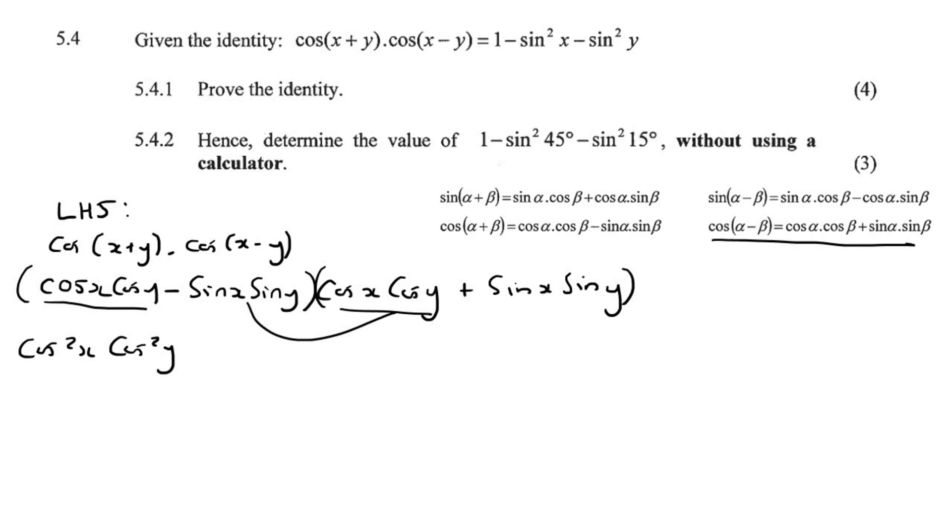Then you would multiply those parts together. Then what you'll find is that this part and then this part, one will be a plus and one will be a minus. And so those parts will actually cancel out. And then lastly, we will be left with this last part. So that will become minus sin²x sin²y.